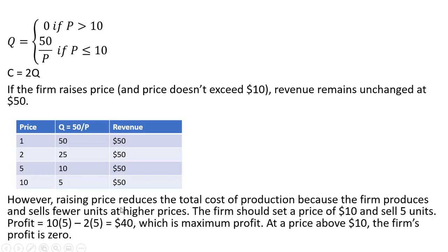However, raising price, although it doesn't change revenue, it does reduce the total cost of production, because the firm produces and sells fewer units at higher prices. Therefore, the firm should set a price of $10 and sell 5 units of output. The profit in this case would be at a maximum.